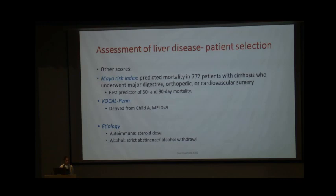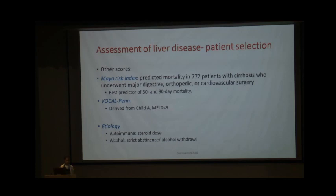The etiology of liver disease also affects outcomes. Patients with autoimmune liver disease on steroids may need dose adjustment or stress doses perioperatively. Alcoholic patients should be advised abstinence; there is a risk of alcohol withdrawal delirium in the postoperative period. Patients with alcohol-related CLD may show significant improvement in liver function following abstinence, shifting their risk ratios lower, so it is worth allowing a period of abstinence before surgery.